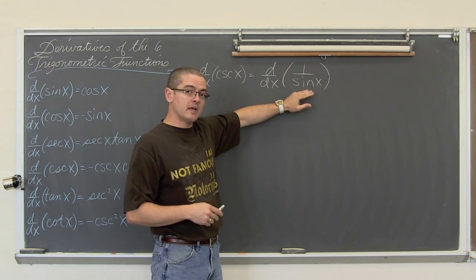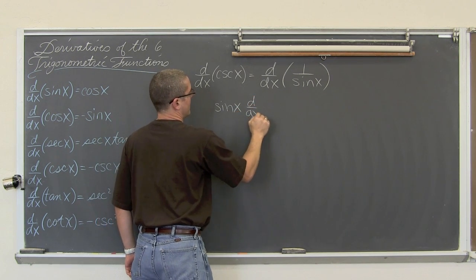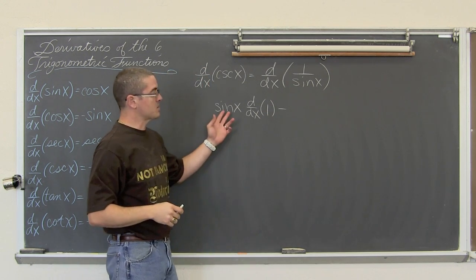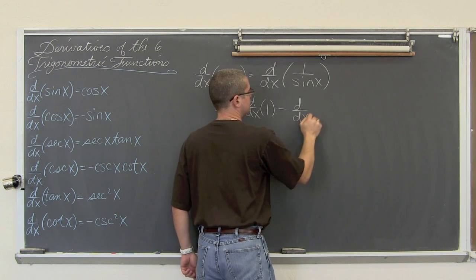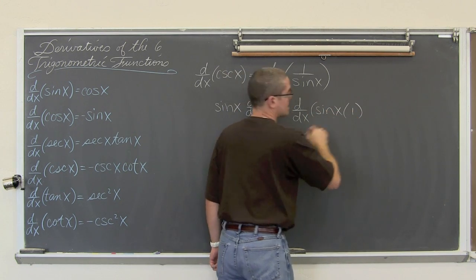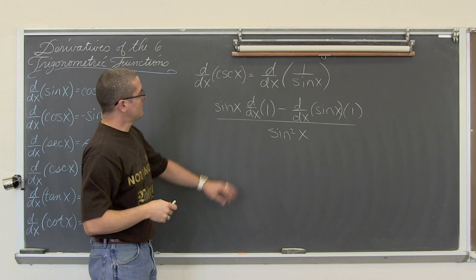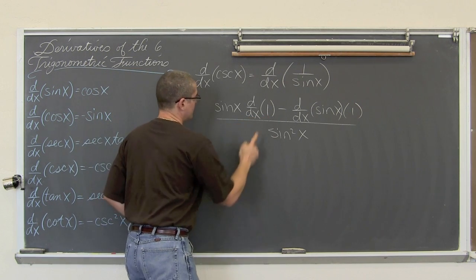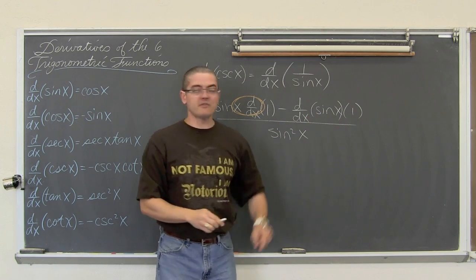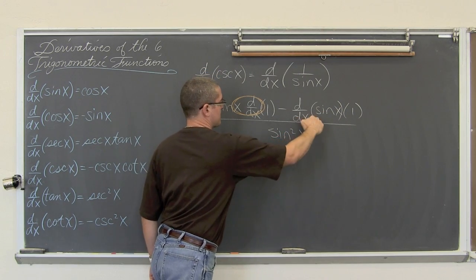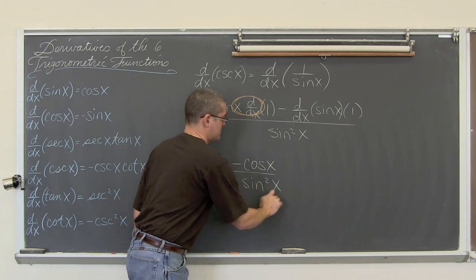The quotient rule says that we need to take the denominator, so that is going to be the sine, so this is going to be equal to the sine of x times the derivative with respect to x of one, minus the derivative of the denominator times the numerator, all over the denominator squared — all over sine squared x. The derivative of a constant is equal to zero, so this first term in the numerator is just going to be zero. Minus — the derivative of sine is equal to cosine, so the derivative of sine of x is equal to cosine of x times one, over sine squared x.